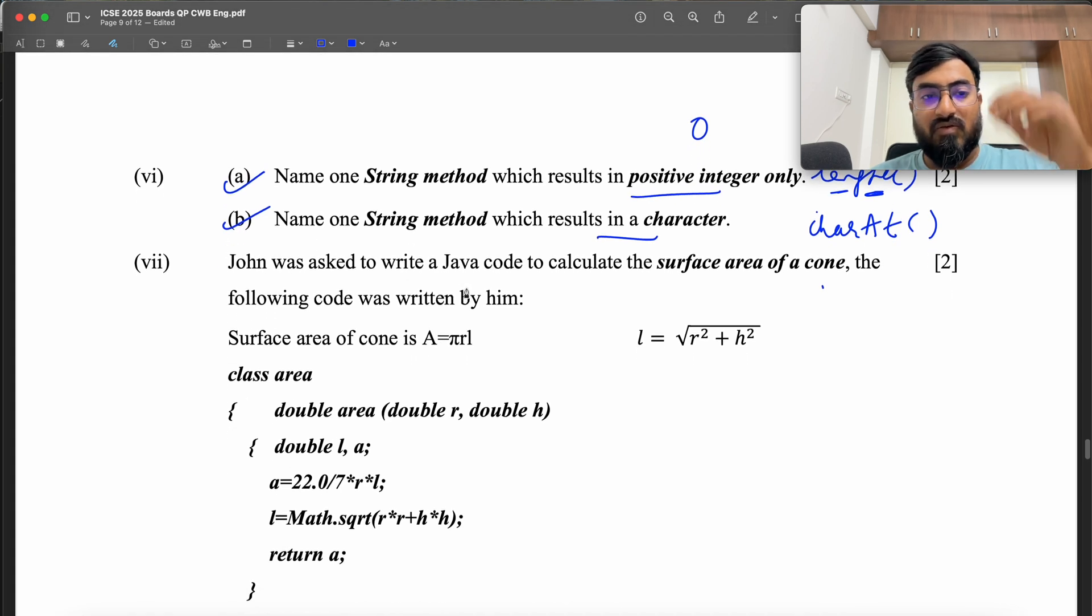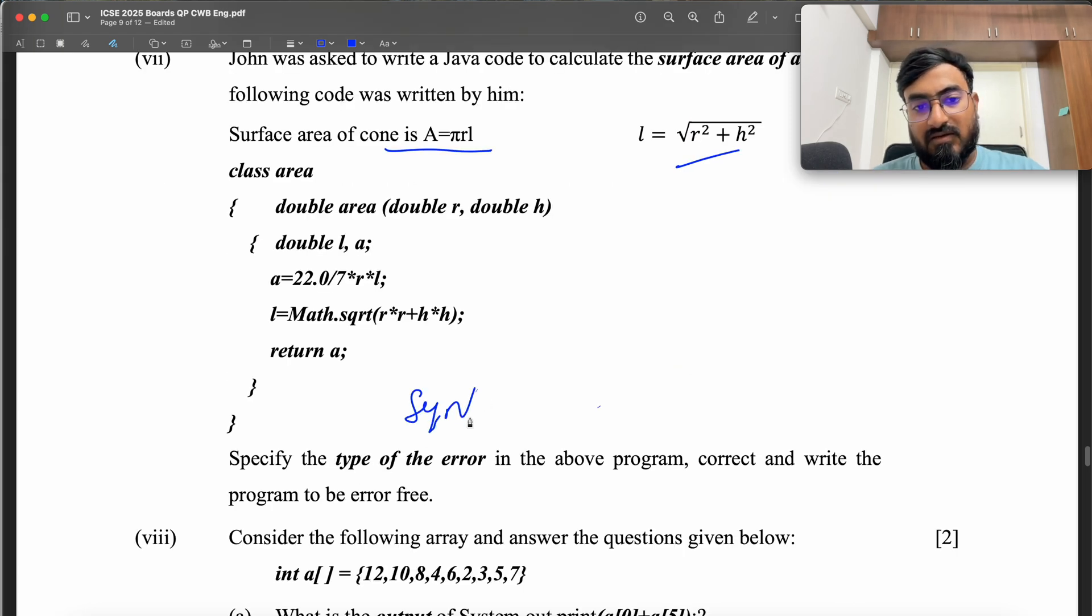John was asked to write a Java code to calculate the surface area of a cone. The following code was written by him. Surface area of cone is π R L, and L is square root of R square plus S square. So this is going to be a syntax error. Now there are more than one syntax errors here. First, you have the name of this function as the same name as of the class. This is okay if this was a constructor, but this looks like a function that is taking parameters and returning a value. Second syntax error is that we are using the value of L before we are initializing it. This statement has to come first and then we calculate A. Because in order to calculate π R L, you have to calculate the value of L first. L first and then A.